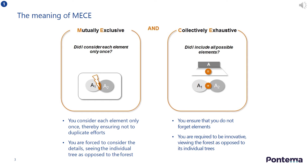Collectively exhaustive means that your buckets should include all relevant elements. For example, every employee in an organisation might belong to an age group born between 1900 and 2000. If you come up with an element that does not fit into any of your buckets, your approach is not MECE. This way of organising information means you are required to be innovative, seeing the forest as opposed to its individual trees.